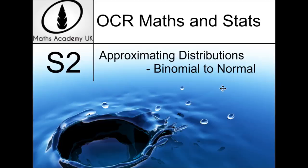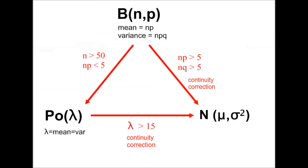We are approximating distributions — going from a binomial distribution to a normal distribution, so a normal approximation to the binomial. Starting with a binomial distribution, if certain conditions are met we use a normal approximation. In the normal distribution we need the mean and the variance, so we calculate these from the binomial distribution. Because we are going from a discrete distribution to a continuous one, a continuity correction is required.